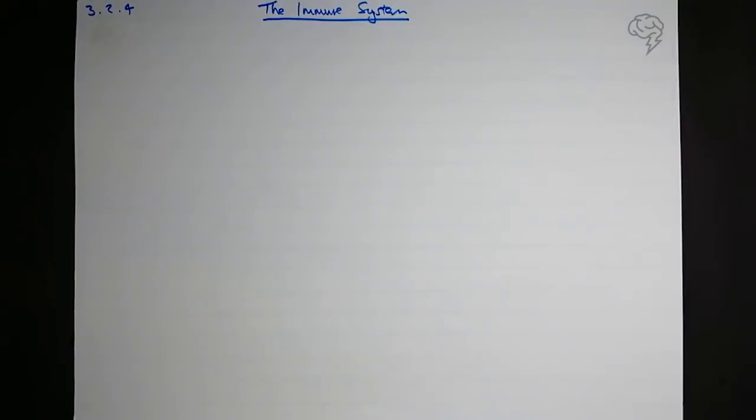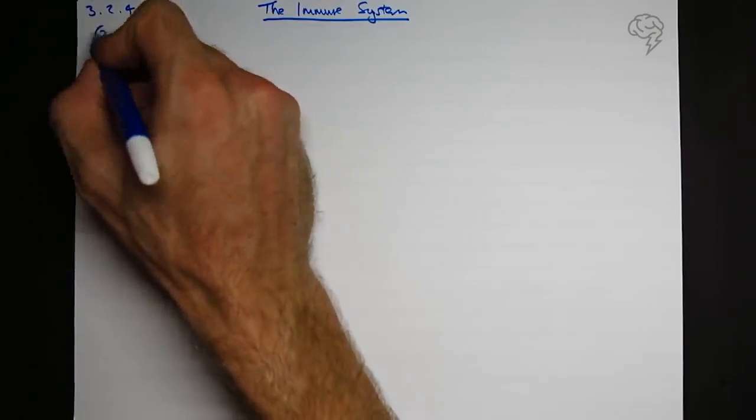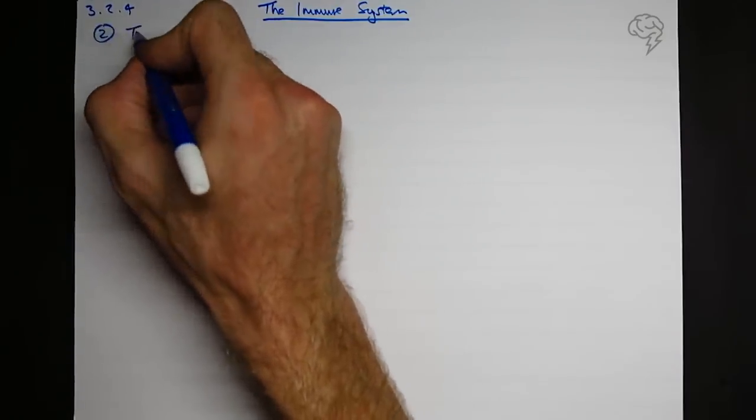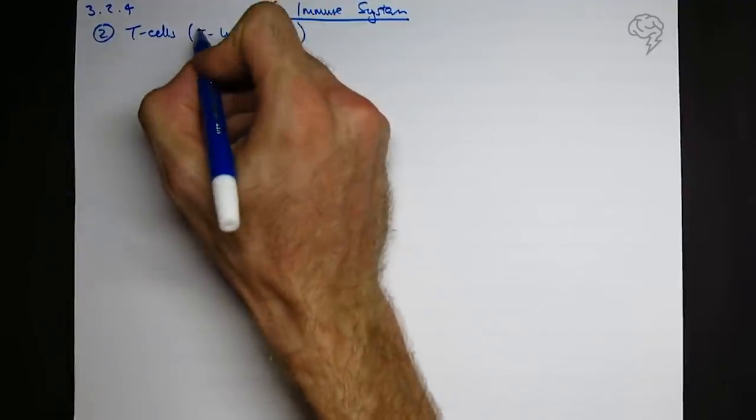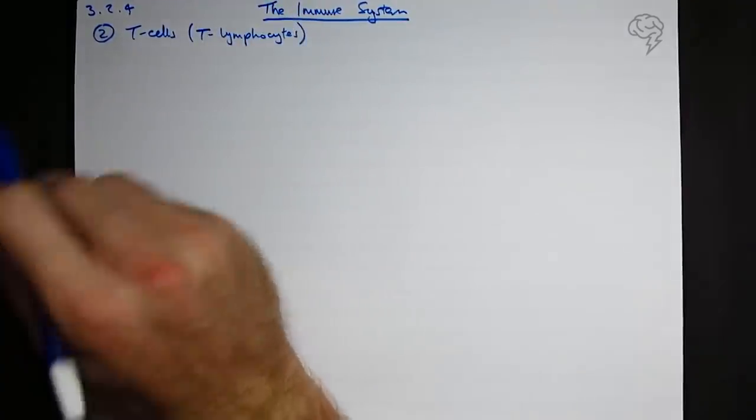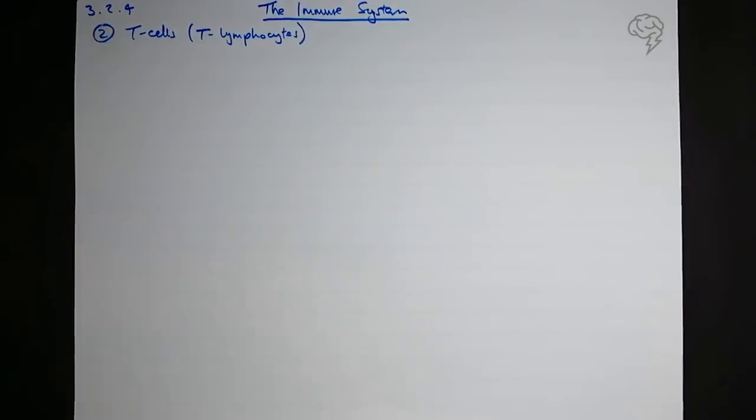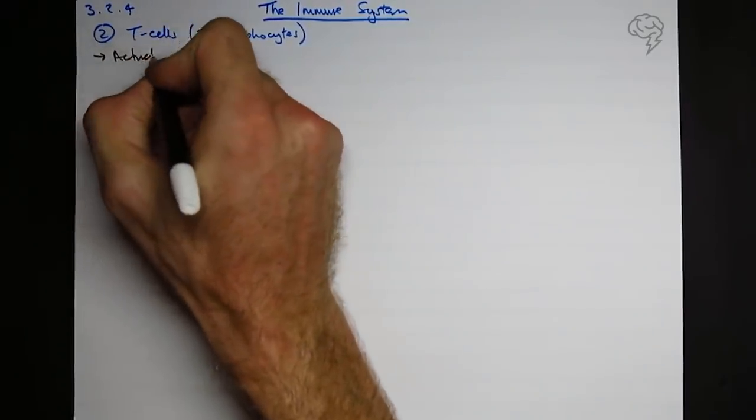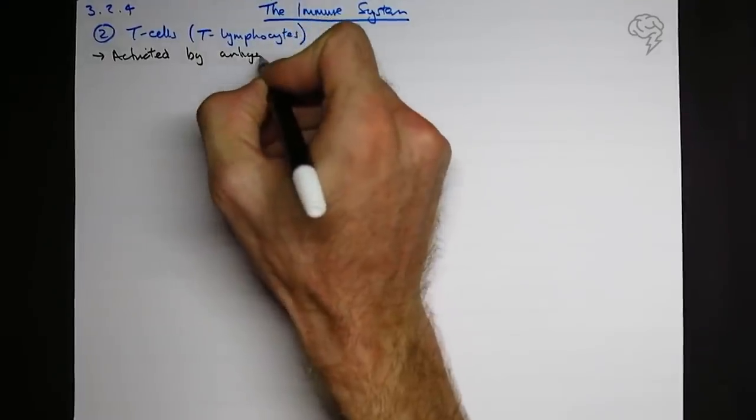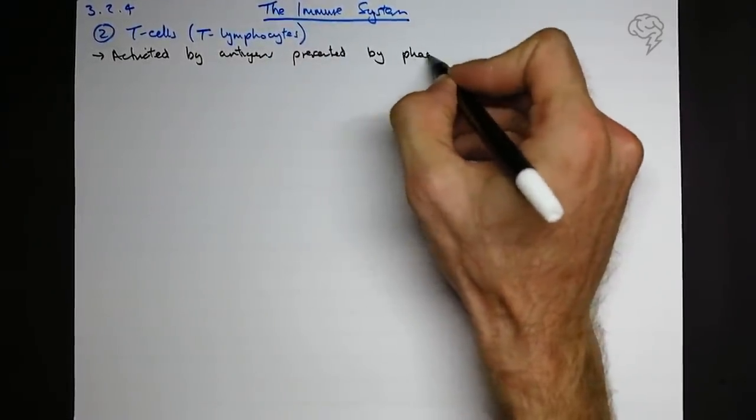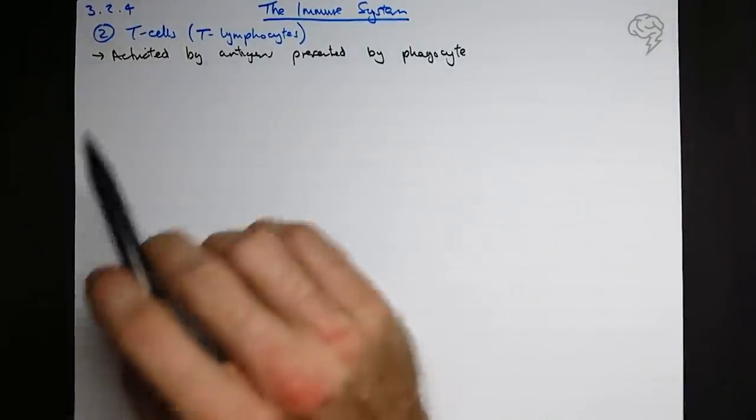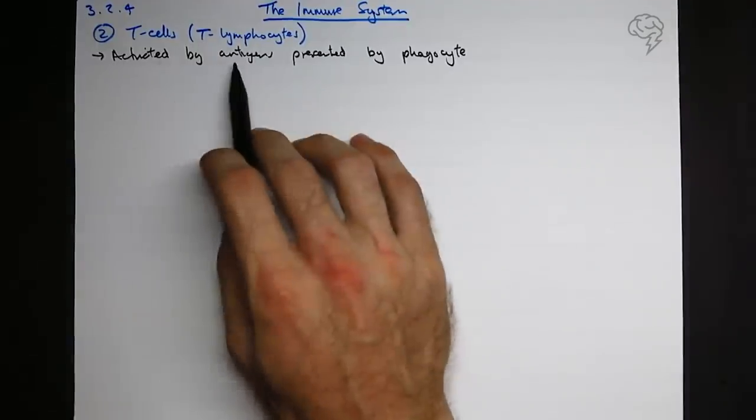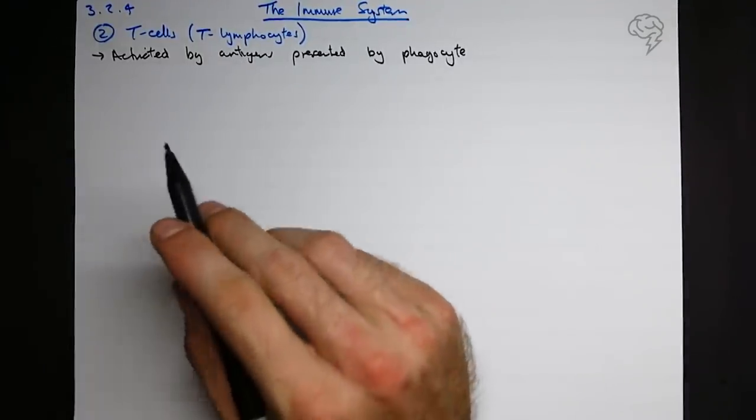Remember at the end of phagocytosis they present the antigens of the pathogen on its surface. Stage two, we've got T-cells, also known as T lymphocytes. They're types of white blood cells. We accept T-cells in the mark scheme, so let's keep things simple and call them T-cells. What do we need to know about them? Well, they're activated by the antigens presented by the phagocyte. So these guys actually don't react to the antigen on the pathogen itself, they only react, they're only activated by the ones presented by the antigen presenting cell, the phagocyte.